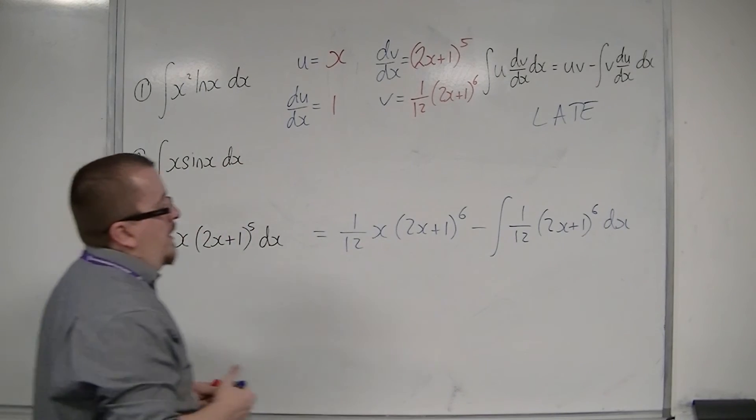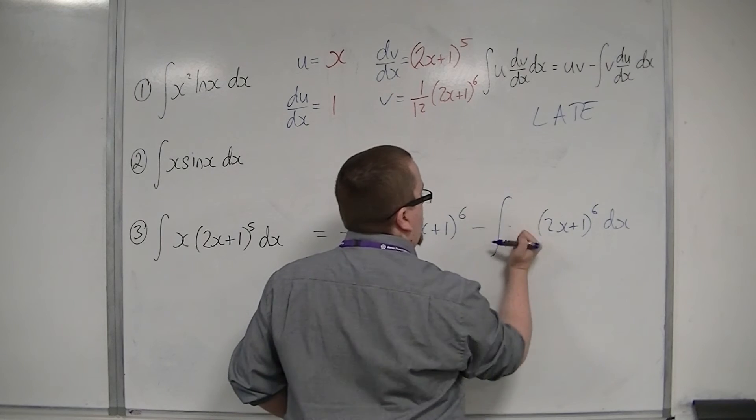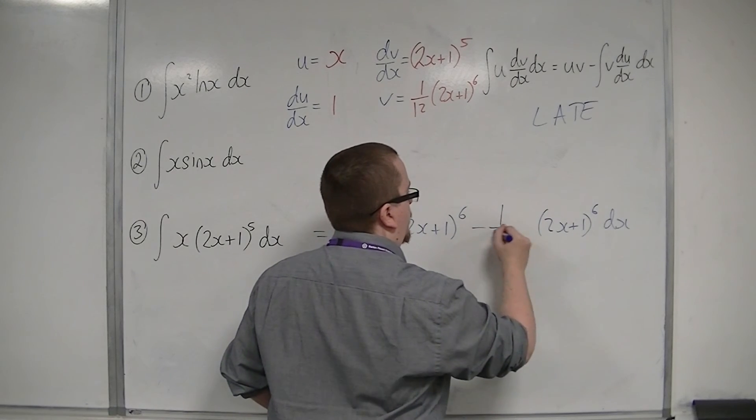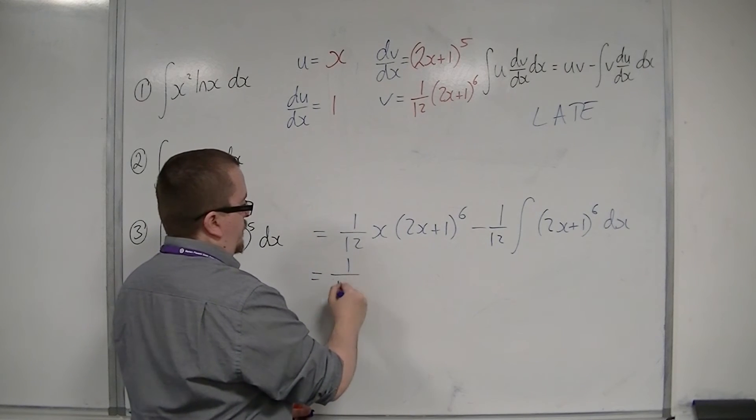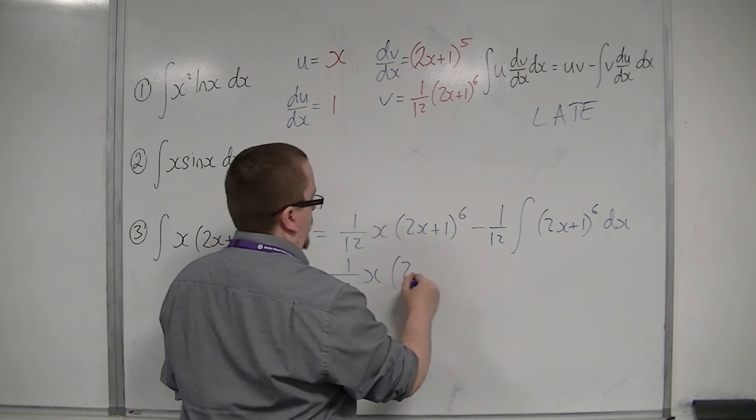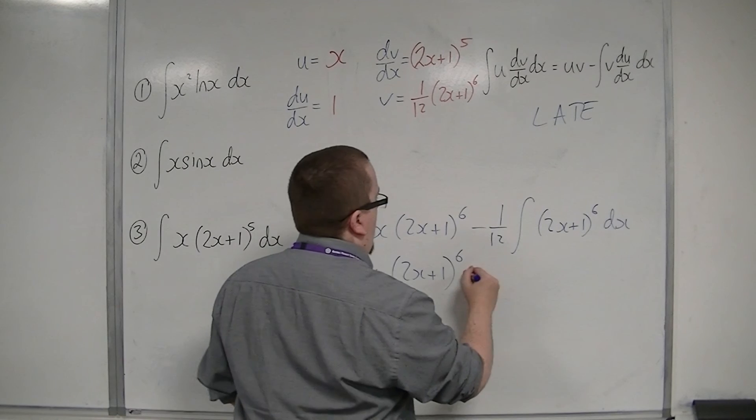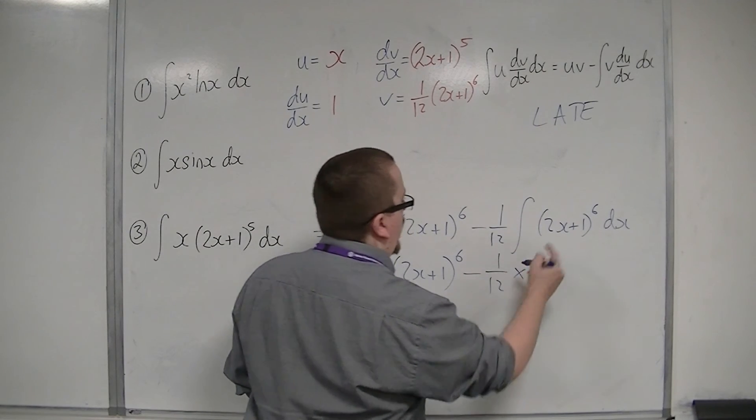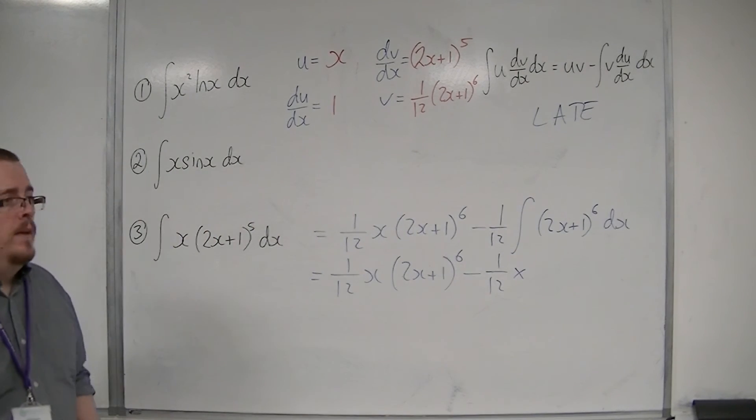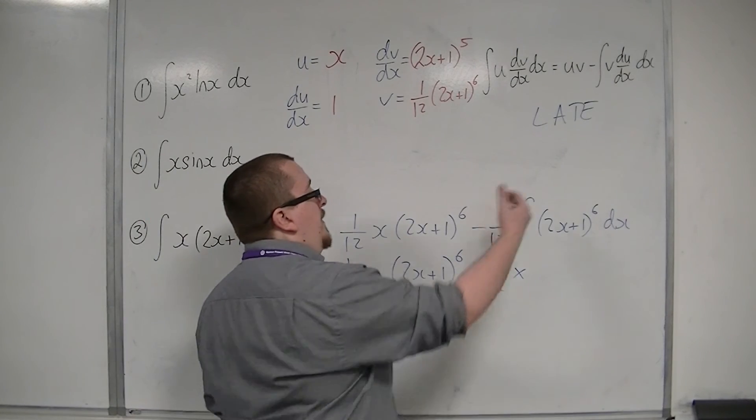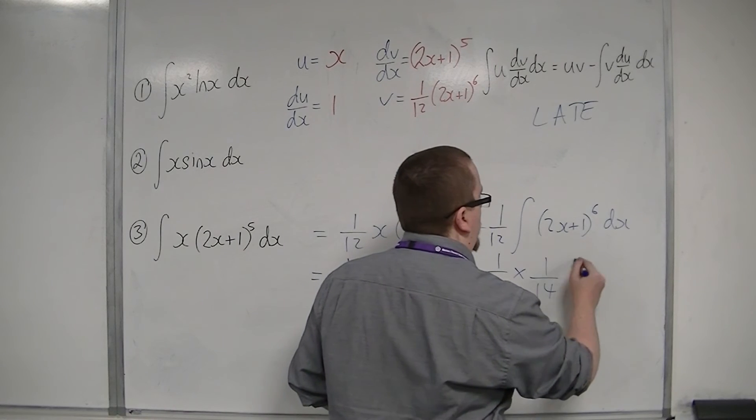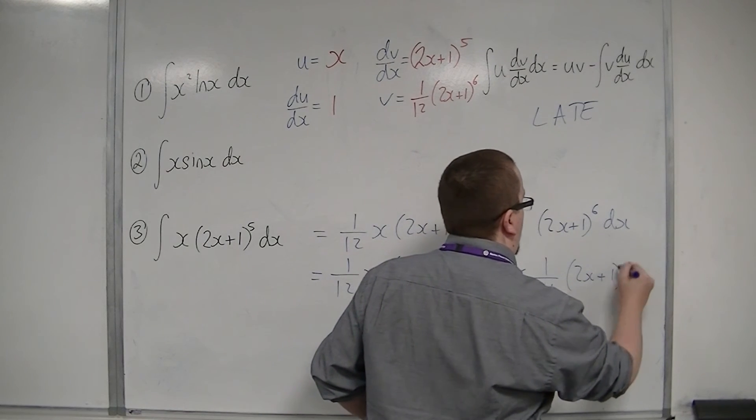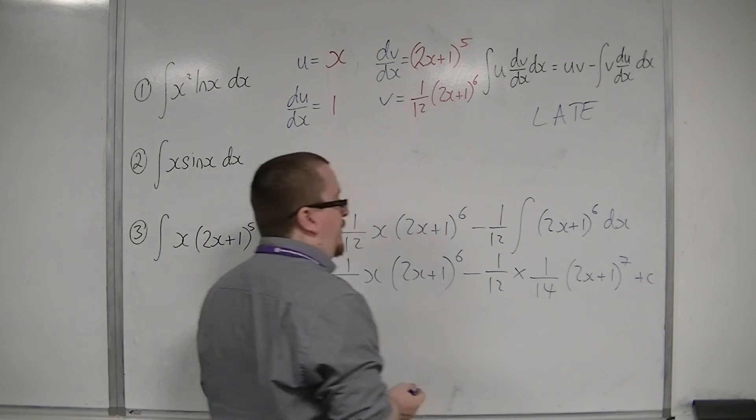So I'm going to pull the 1 twelfth outside of the integral sign, and we're going to reverse chain rule this again. So add 1 to the power, we get 7, 7 times the 2 is 14, so we're going to have 1 over 14, 2x plus 1 to the power of 7, plus that constant c.